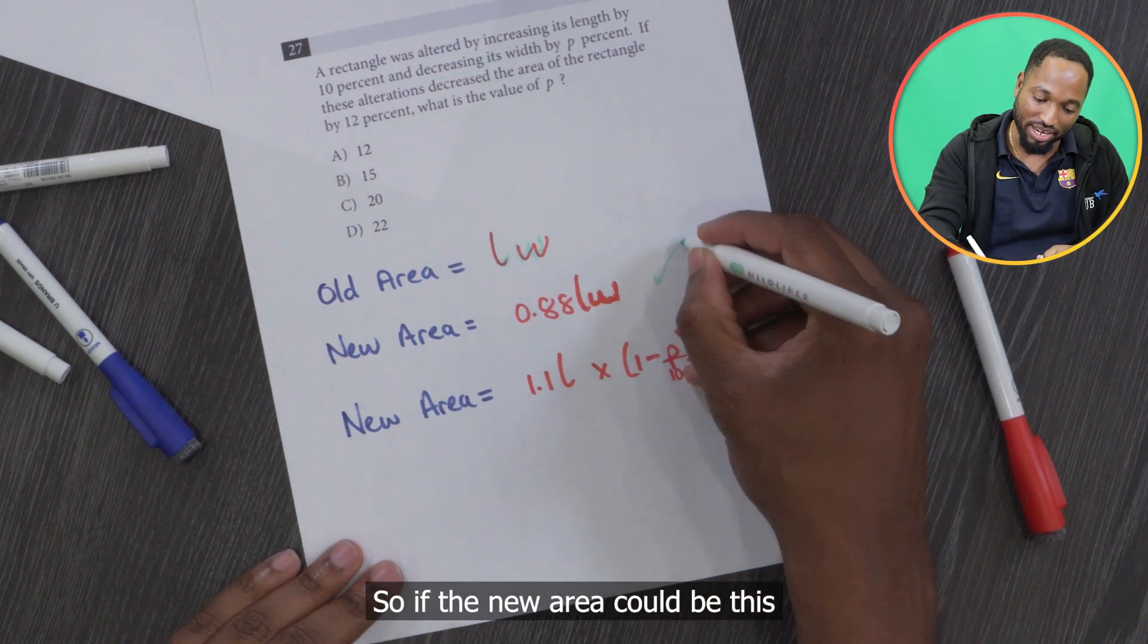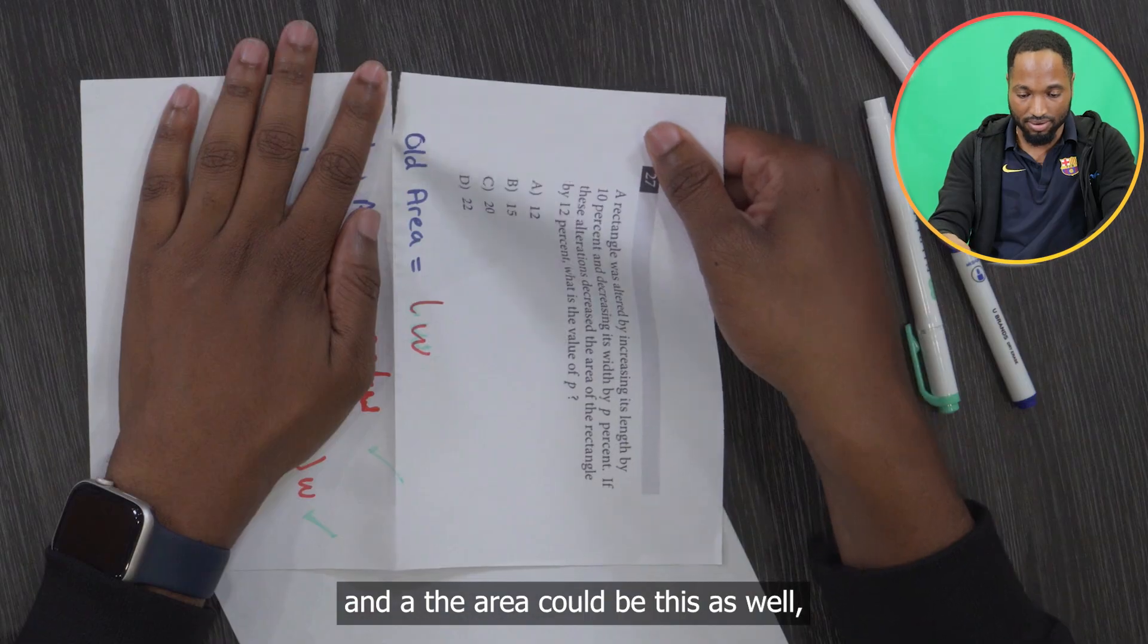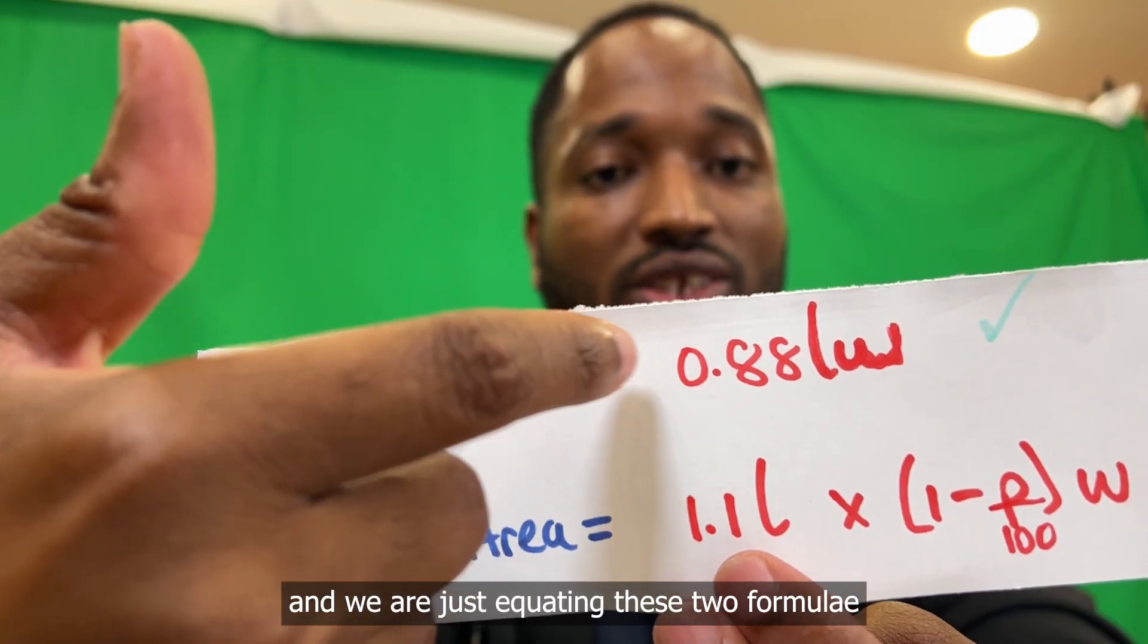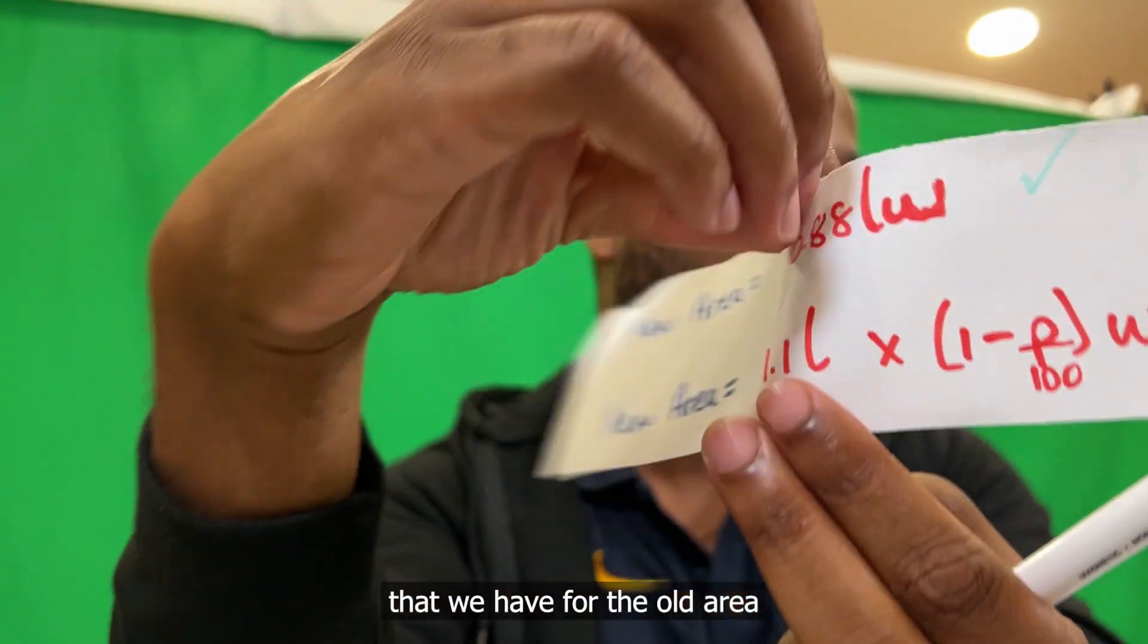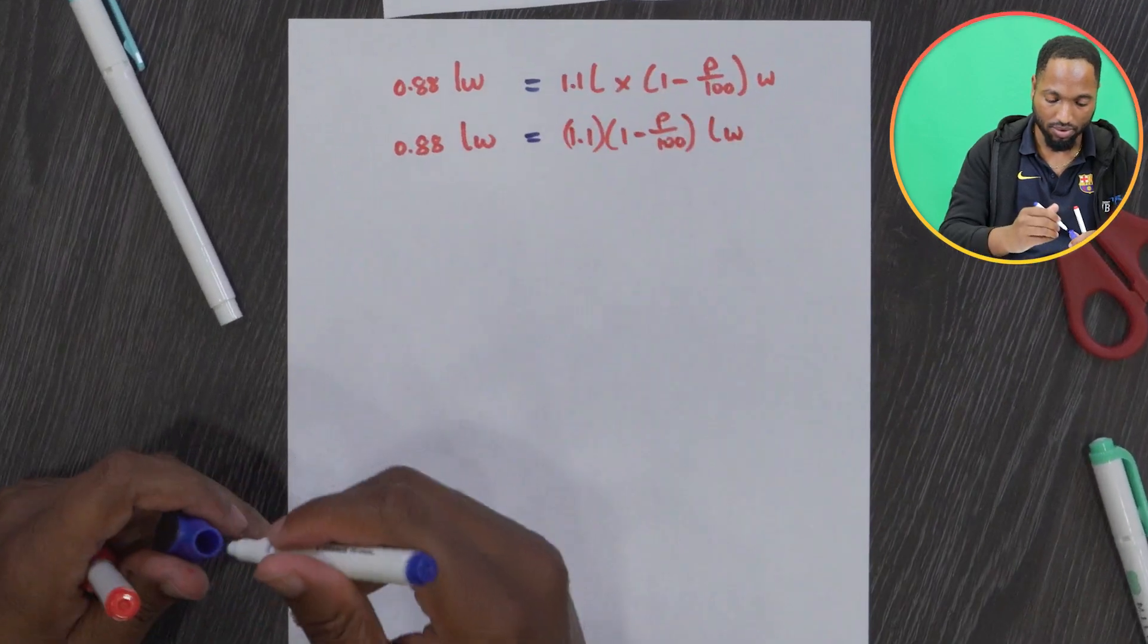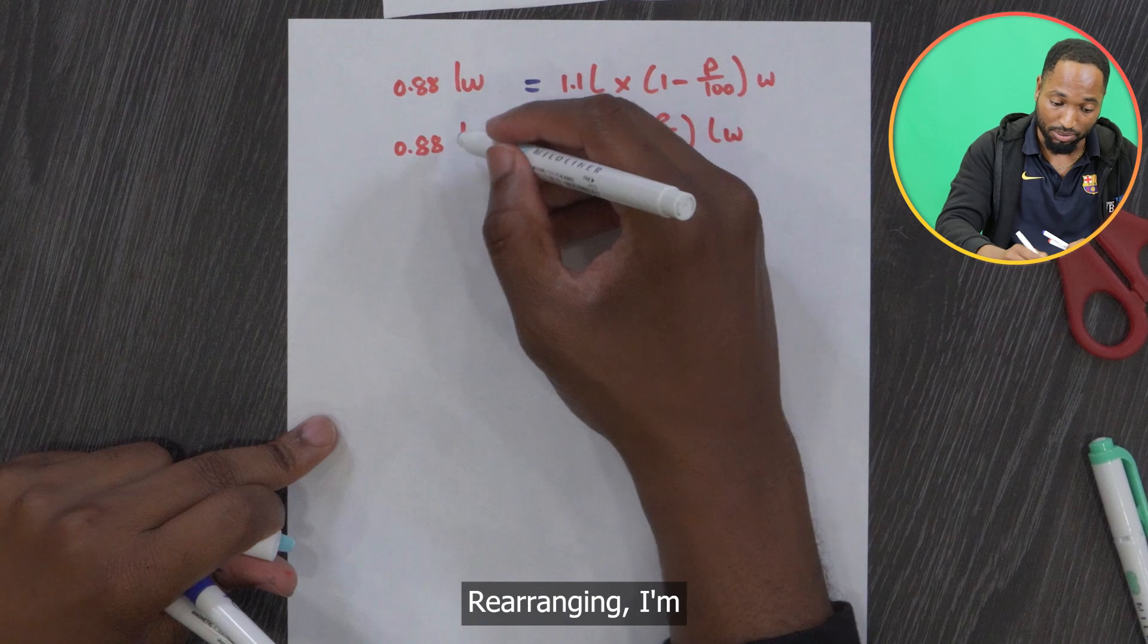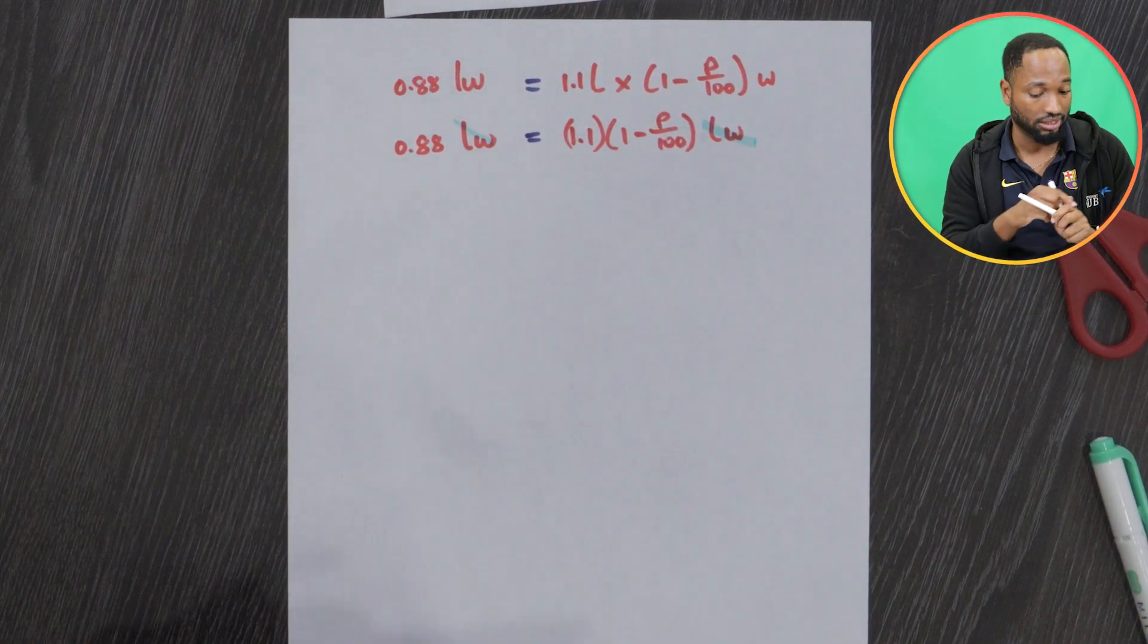So the new area could be this, and the new area could be this as well. We are just equating these two formulae that we have for the new area. Rearranging, I'm seeing LWs on both sides, so let's eliminate that.